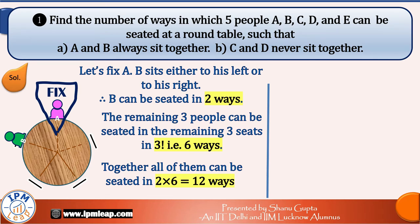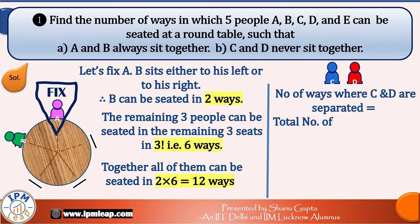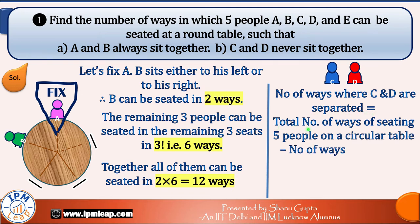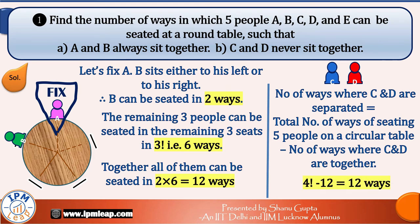Part B: C and D never sit together, meaning C and D are separated. A simple approach: the number of ways where C and D are separated equals the total number of ways of seating five people on a circular table (which is 4!) minus the number of ways where C and D are together. From Part A, any pair seated together gives 12 ways. So our answer is 4! − 12 = 24 − 12 = 12 ways.